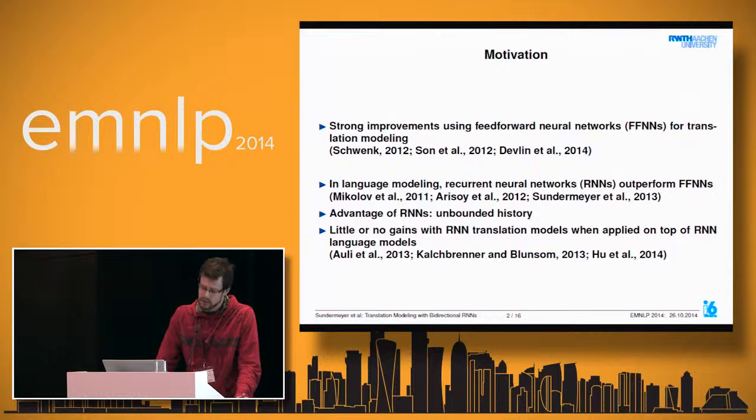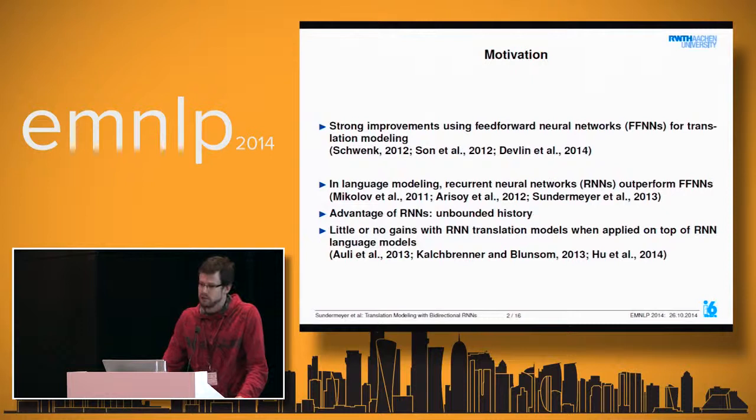The advantage of recurrent neural networks is that they can take an unbounded history into account to make predictions. This is different from feedforward neural networks, where you have a fixed window of information available.